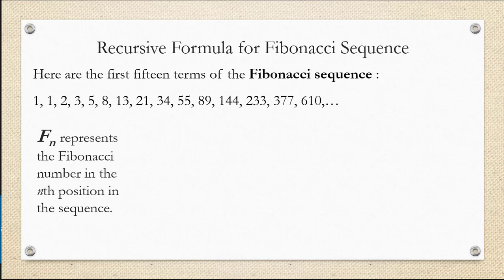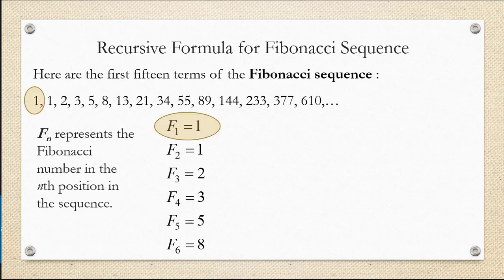We represent the terms in the Fibonacci sequence with the symbol F sub n, where n represents the nth position in the sequence. So for example, the first term in the sequence, we call F sub 1, which is 1. The second term is F sub 2, which is also 1.